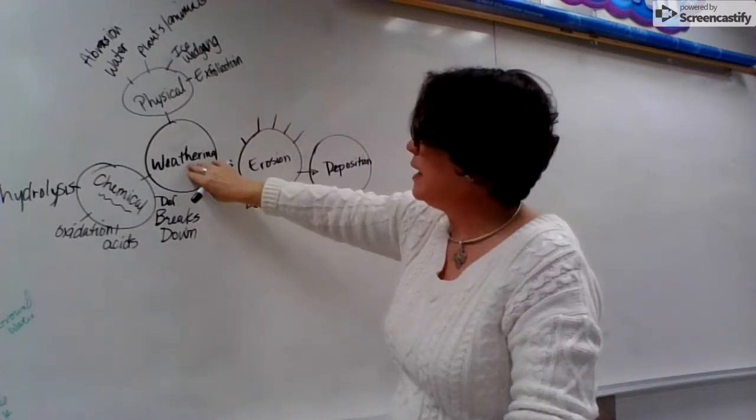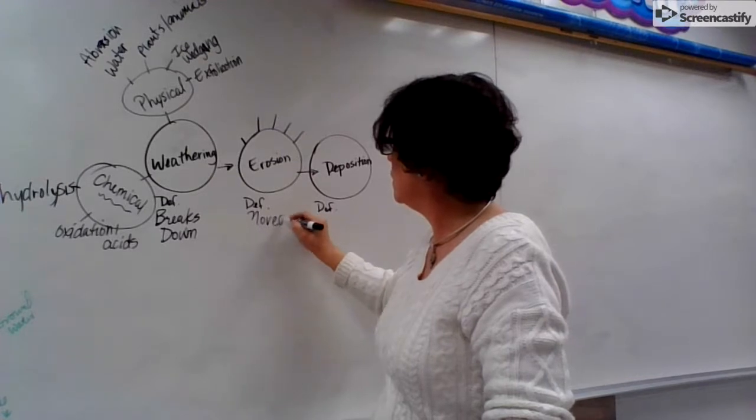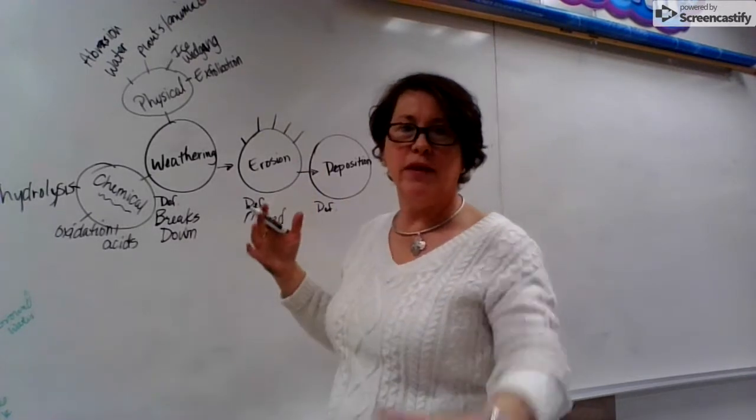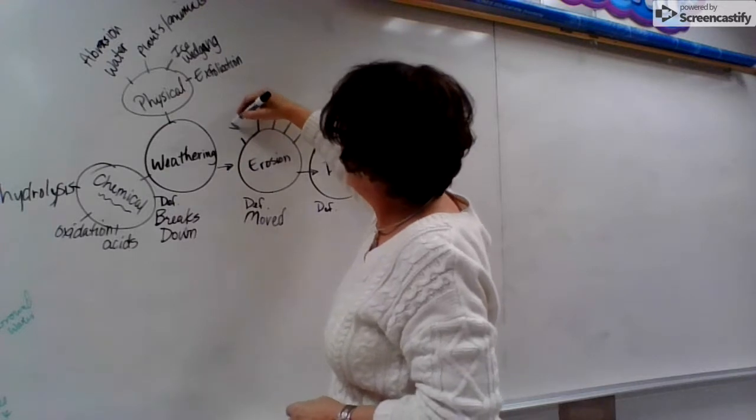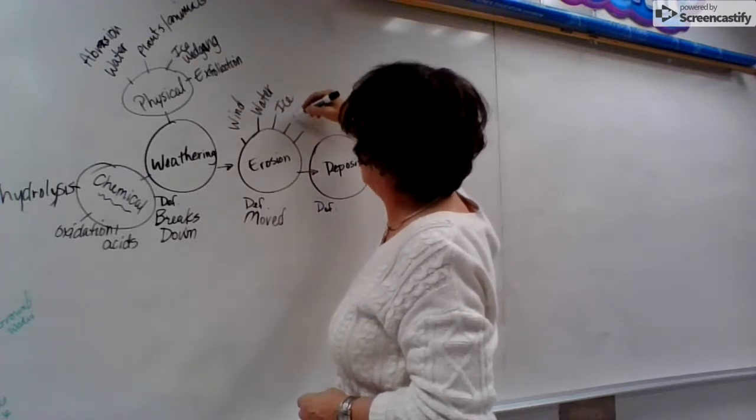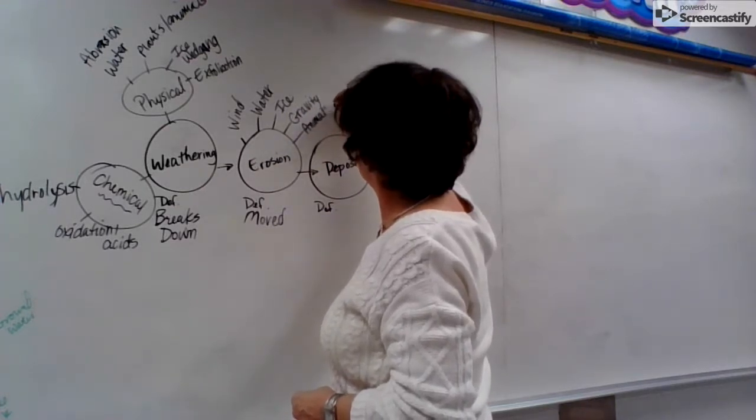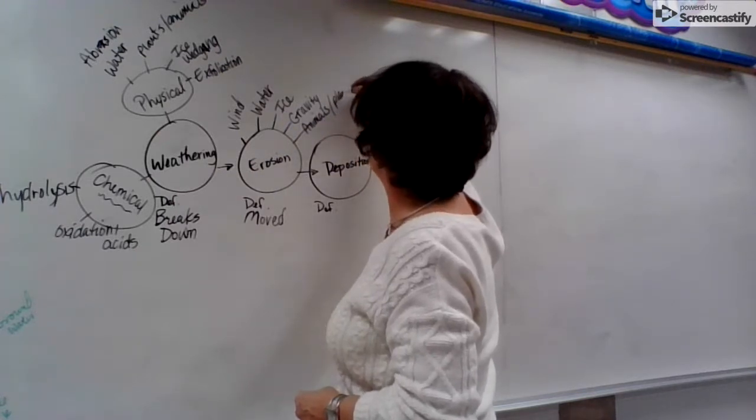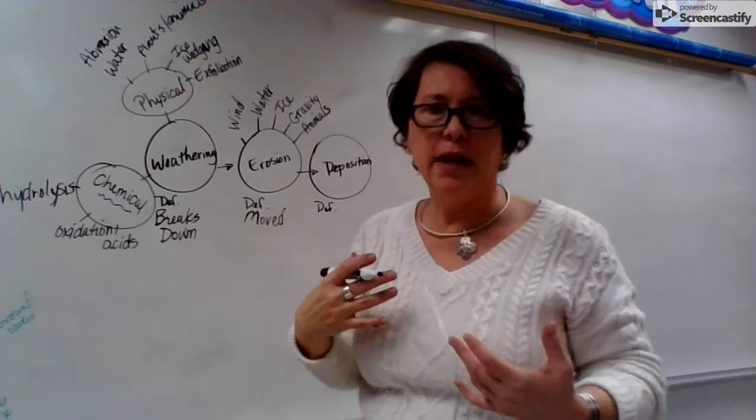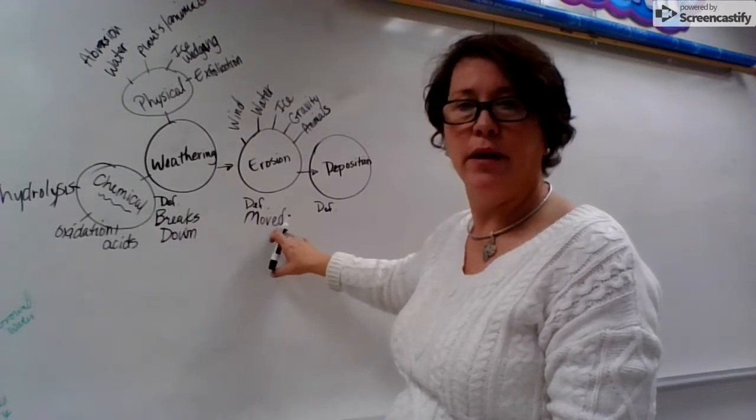What's going on with erosion? So things are broken down here, earth materials are broken down, then they are moved. That's our definition, they are moved. What helps move things? There are five agents of erosion. We have wind, water, ice, gravity, and possibly animals. Animals, because we can move stuff. Humans and animals, that's more of what I'm thinking of. So moved breaks down and then is moving something.